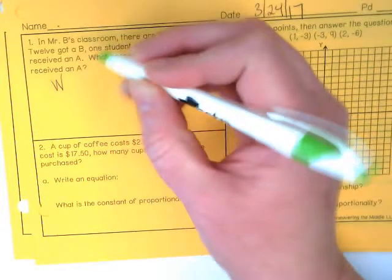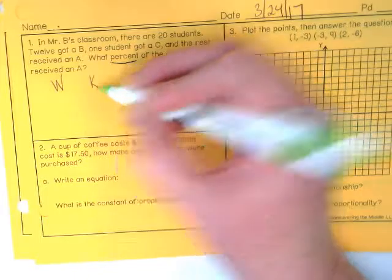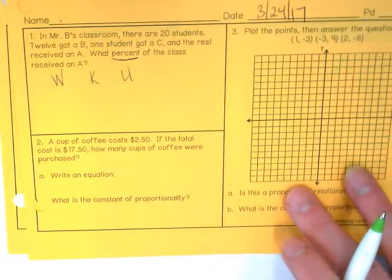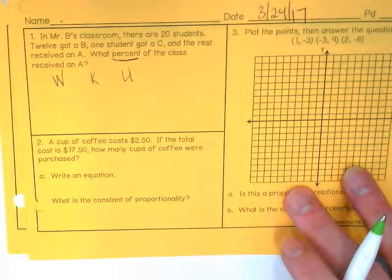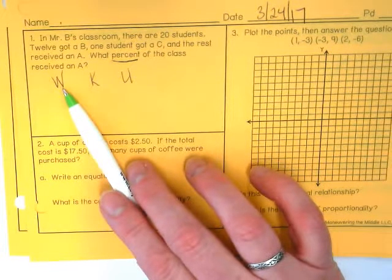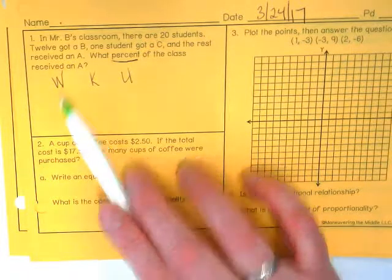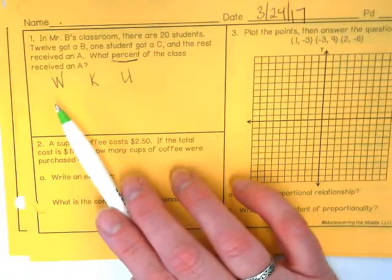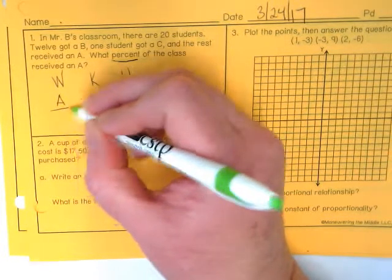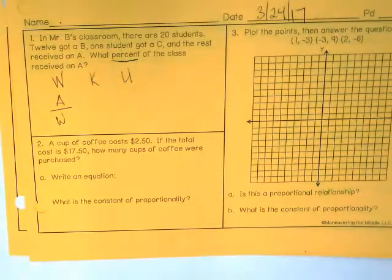We want a word ratio, our known ratio, and our unknown. So when I look at this, my word ratio based on my question 'what percent of the class received an A' means that I need to figure out the number of kids who got an A compared to the whole class. That's my word ratio.